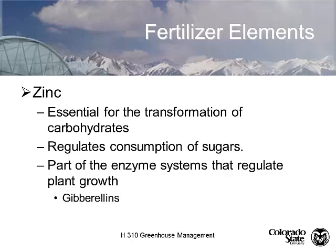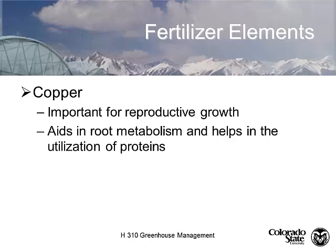Zinc is essential for carbohydrate development and enzyme synthesis. Zinc deficiency interrupts the metabolism of gibberellic acid, which can cause stunted internode length — some tree fruits grown on alkaline soils show a rosetting pattern from compressed internodes. In the greenhouse, compressed internodes are typically caused by aphids rather than zinc deficiency. Copper is important for protein utilization but is another element where you have to create the deficiency in the lab.